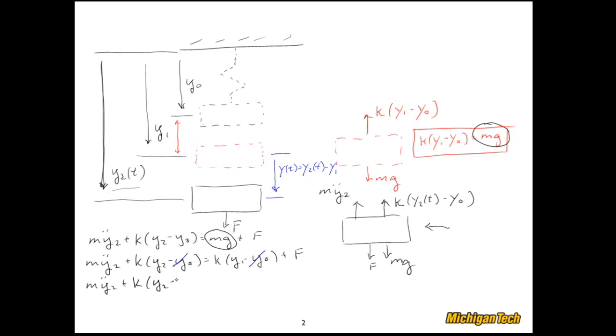Then what I can do is restructure this equation just a little bit and go m y2 double dot plus k, there's a y2, lo and behold, minus y1 equals f when I bring that term over to the left-hand side. And so that gives me m y2 double dot plus k y equals f.